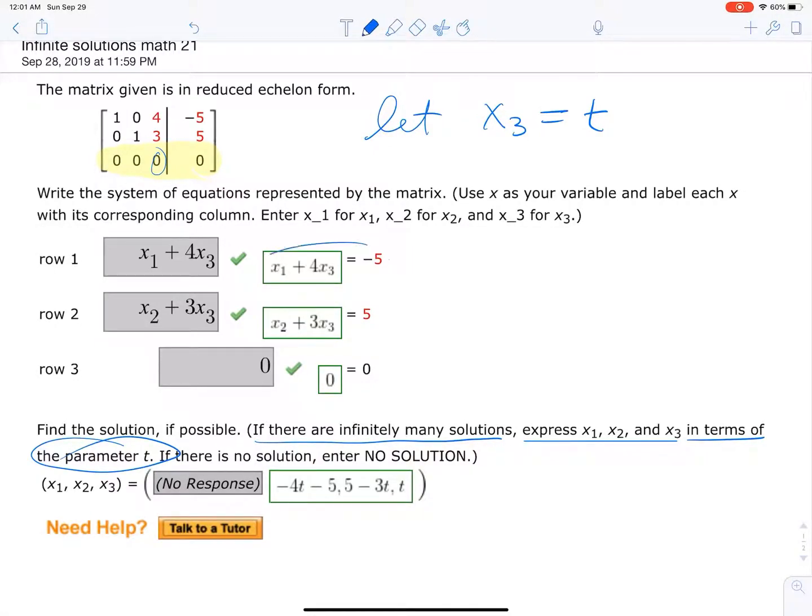Alright, let's start with the first equation. We have, basically I'm gonna rewrite it in terms of t. So x1 plus 4t equals negative 5. If we subtract 4t from both sides, we get x1 equals negative 5 minus 4t.